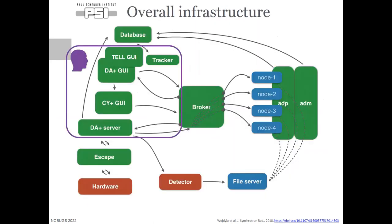The overall architecture of our data acquisition stack is a microservice architecture. We have a user sphere of influence inside the purple to the left. The user will interact with our graphical user interfaces for the robot sample changer, data acquisition, and serial crystallography. They will also execute data acquisition jobs with our data acquisition server and be able to view the processing results. We have an abstraction layer between our GUIs and our hardware, which we call the ESCAPE, which maintains different states that our beamline should be in for sample alignment, data collection, and sample exchange.